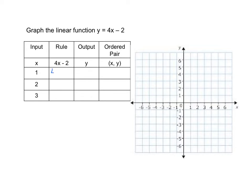So our first one with our rule, we're going to have 4 times 1 minus 2. Well, 4 times 1 is 4, minus 2 would be 2, so our output is 2. The ordered pair is 1, 2. And we have 4 times 2, which is 8, minus 2 would be 6. And then we have 4 times 3, which would be 12, minus 2, which would be 10. So the ordered pair would be 3, 10.